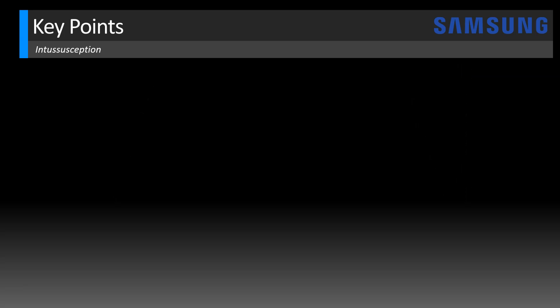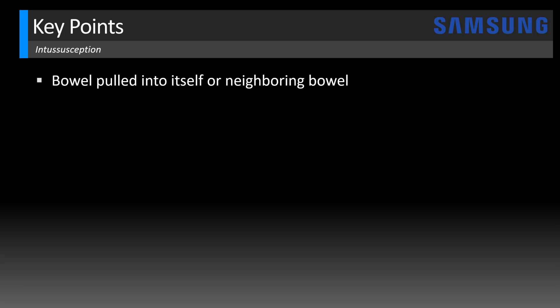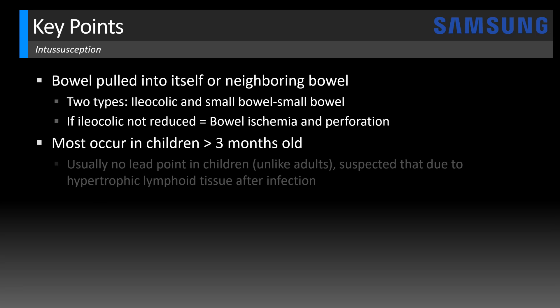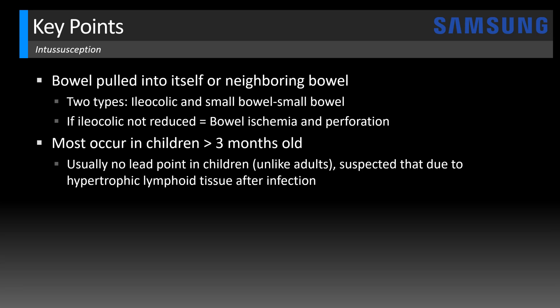Let's look at some key points, which you can also find in the show notes. An intussusception is when bowel is pulled into itself or into neighboring bowel. There are two types: ileocolic and small bowel-to-small bowel intussusception. It's the ileocolic type we're most concerned with because if not reduced it can lead to bowel ischemia and perforation. Most intussusceptions occur in children over the age of three months and there's usually no lead point in children, unlike adults where it's usually brought about by a mass. In children it's often secondary to hypertrophic lymphoid tissue that develops after an infection.